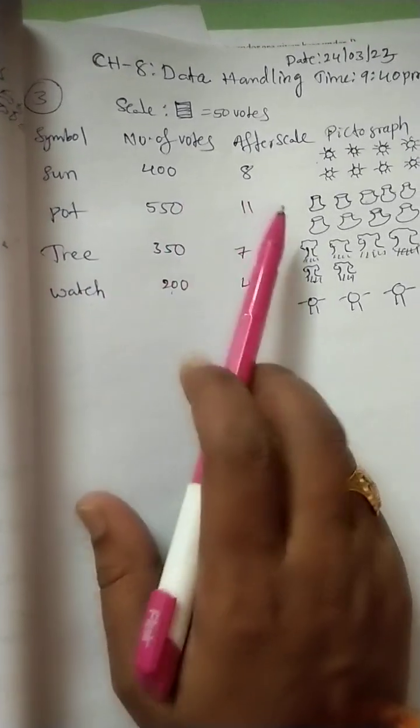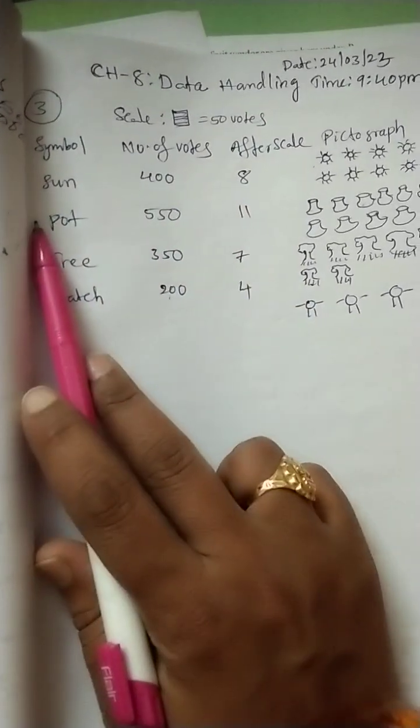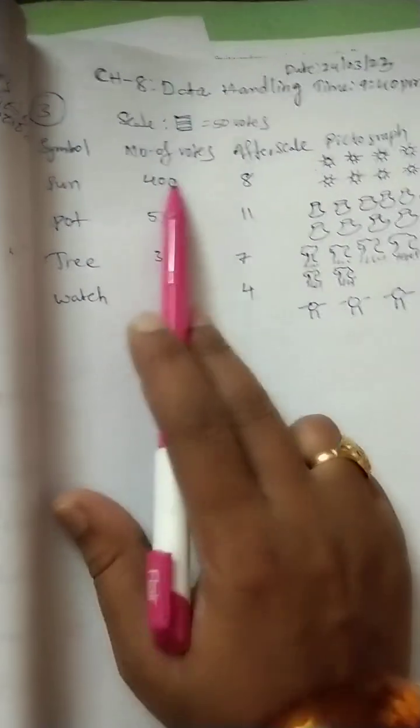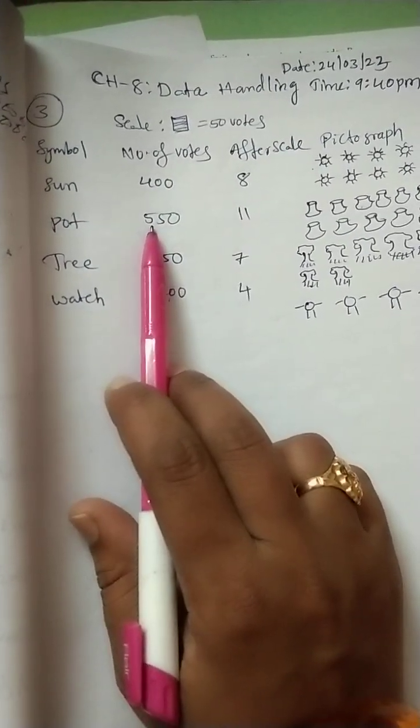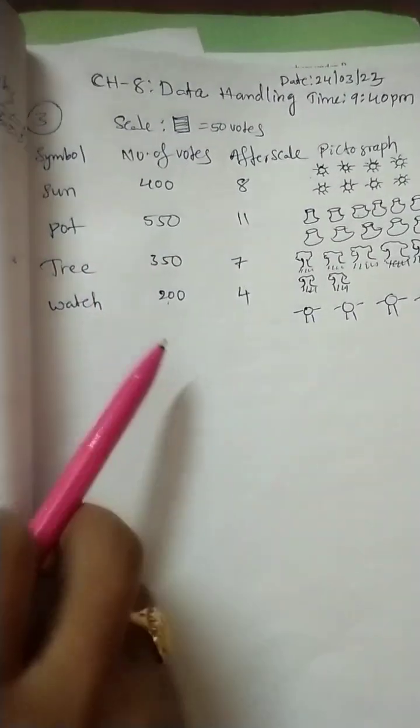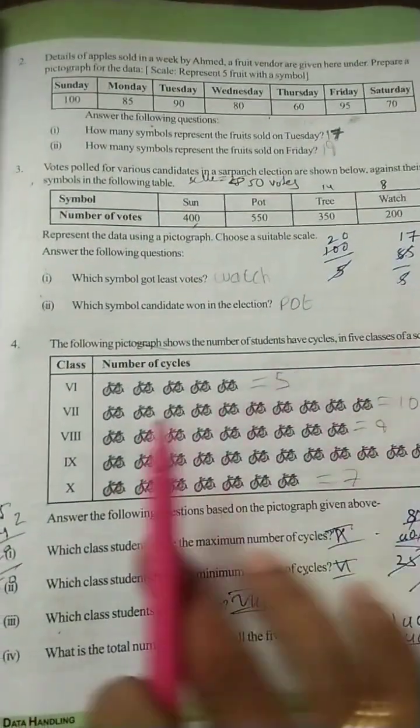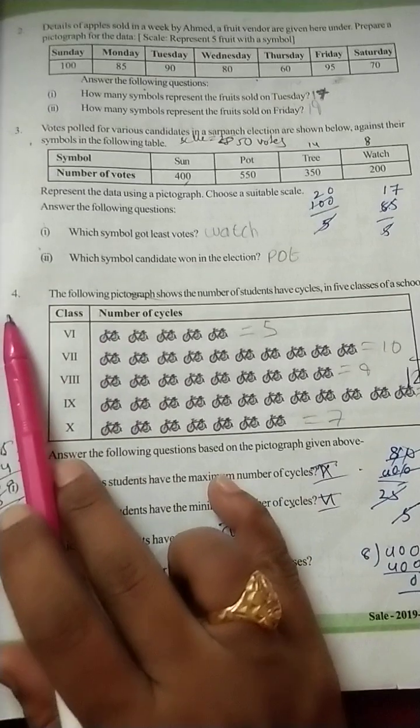Which symbol win the election? Pot symbol win the election. Why? Because when compared to all others, 550 is the greater number. So that pot symbol win the election. Next.